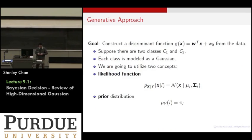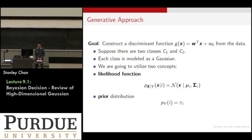The generative approach requires you to construct a model. The goal is to construct a discriminative function g = w^T x + w0, which is a linear classifier, where w is the normal vector and w0 is the offset. To construct this model, you use two quantities: one is called the likelihood function and the other is called the prior distribution. We are going to focus mainly on the Gaussian distribution. Given data points x, you find the class mean and class covariance matrix, and from there construct w and w0 for the two classes.